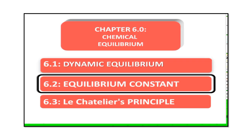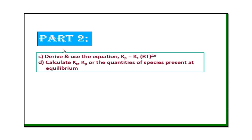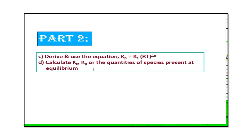Today we are going to cover section 6.2 on the equilibrium constant. This time we need to derive and use the equation Kp = Kc(RT)^Δn, and calculate the Kc, Kp, or quantities of a species present at equilibrium — meaning the concentration, partial pressure, number of moles, or even mass of the species.